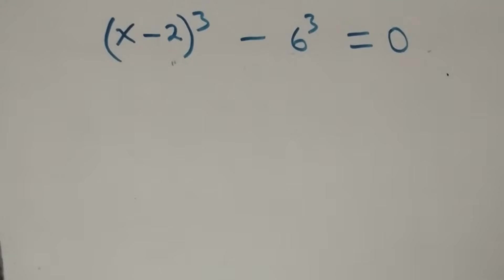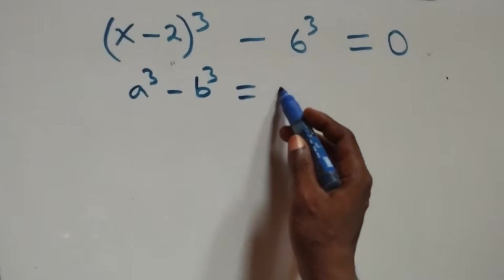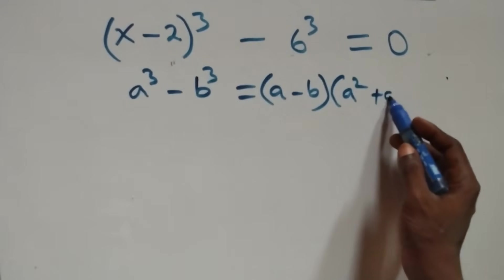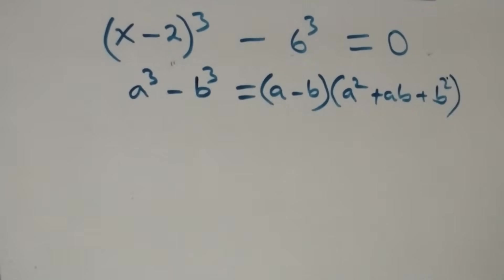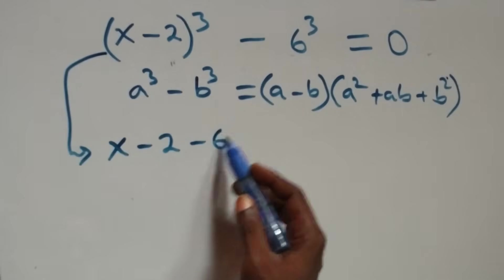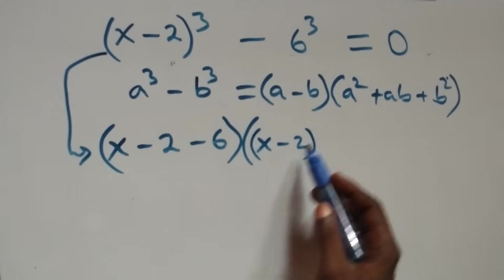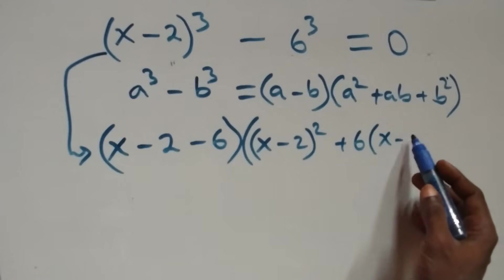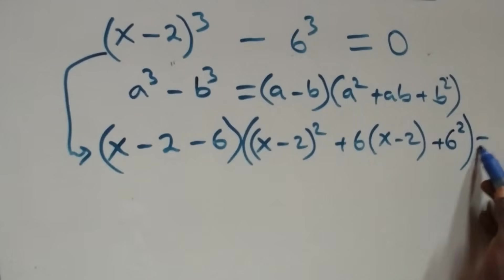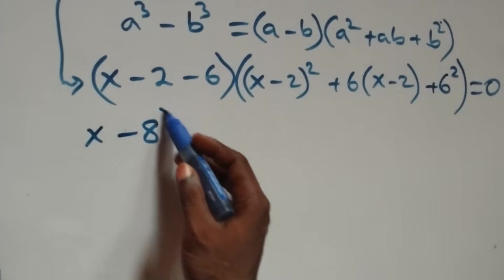Solving from the second case, this follows the difference of cubes formula: a cubed minus b cubed equals a minus b into bracket, open bracket a squared plus ab plus b squared. What we have here becomes x minus 2 minus 6 in brackets, then open brackets x minus 2 squared, plus 6 times x minus 2, then plus 6 squared, close brackets, equals to zero. So x minus 8 into brackets.